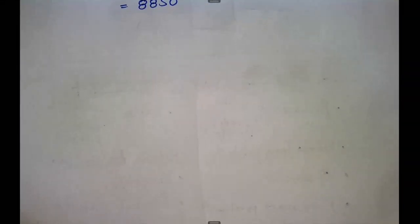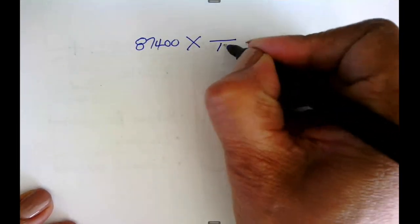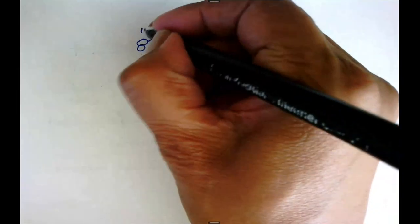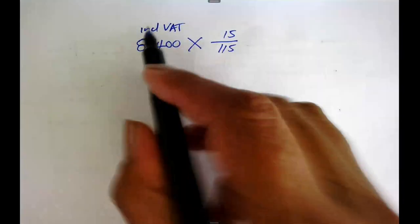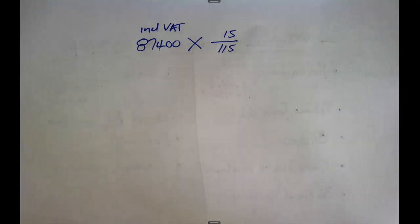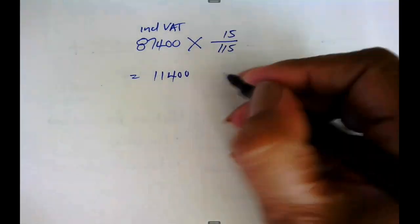The next amount, 87,400, is inclusive of VAT, so it is 115%. I want the 15 over the 115. So it's 87,400 × 15 ÷ 115. I get 11,400 rand. And there I have my VAT amounts. They will always test whether you can calculate the VAT on an exclusive amount and whether you can calculate the VAT on an inclusive amount.